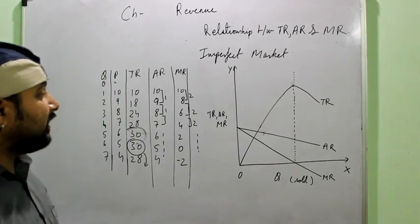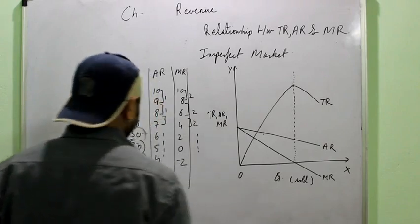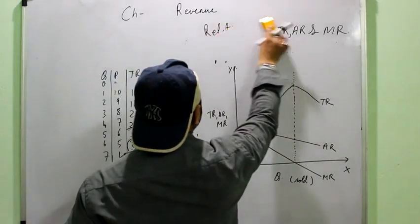Right? Or you can call it TR. It will be inverse U-shape. The points that you have to remember under this relation, the certain points that you have to write.